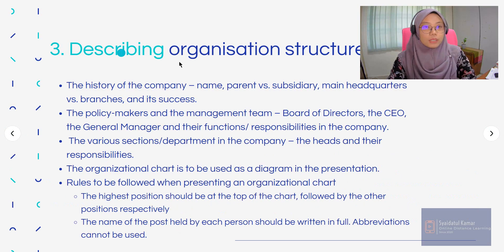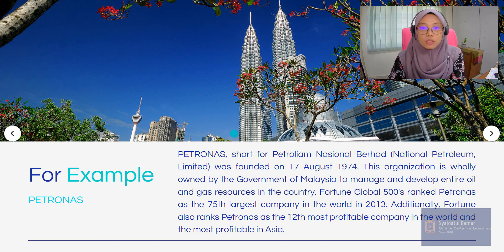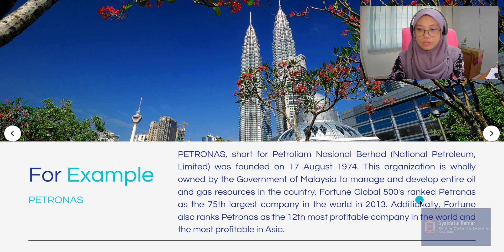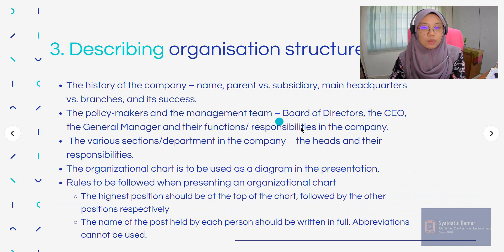Here is an example for number three — describing organisation structure. For example, the company Petronas, short for Petroleum National Berhad or National Petroleum Limited, was founded on 17 August 1974. This organisation is wholly owned by the government of Malaysia to manage and develop entire oil and gas resources in the country. Fortune Global 500 ranked Petronas as the 75th largest company in the world in 2013. Fortune also ranks Petronas as the 12th most profitable company in the world and the most profitable in Asia. That covers the history of the company.